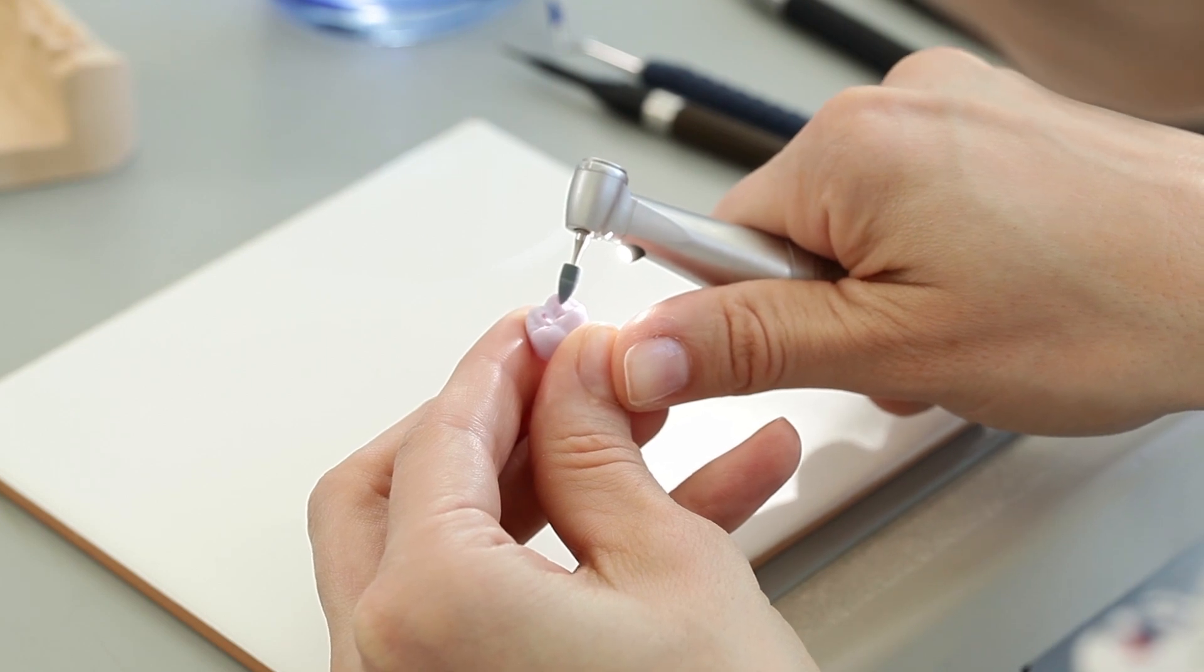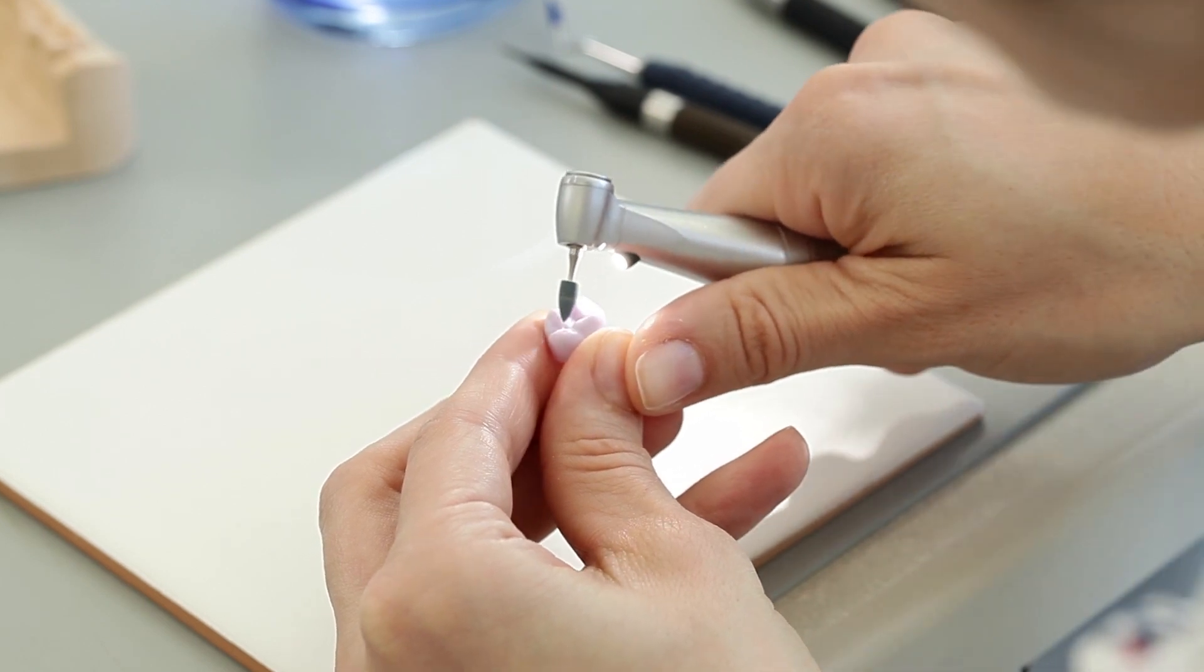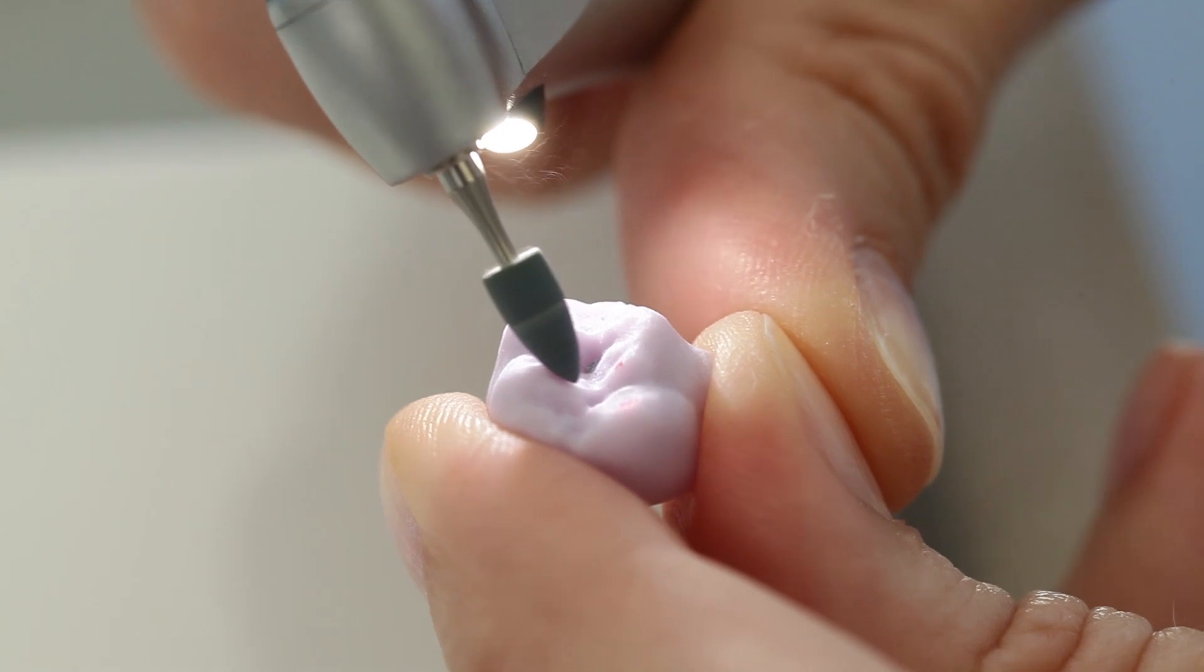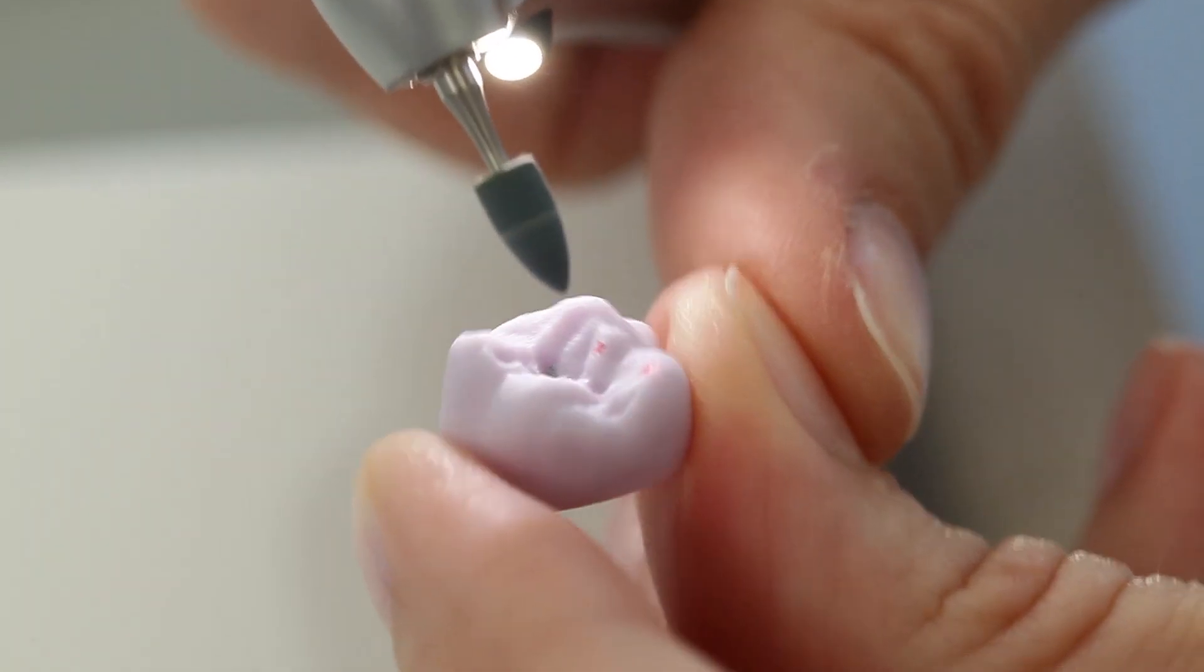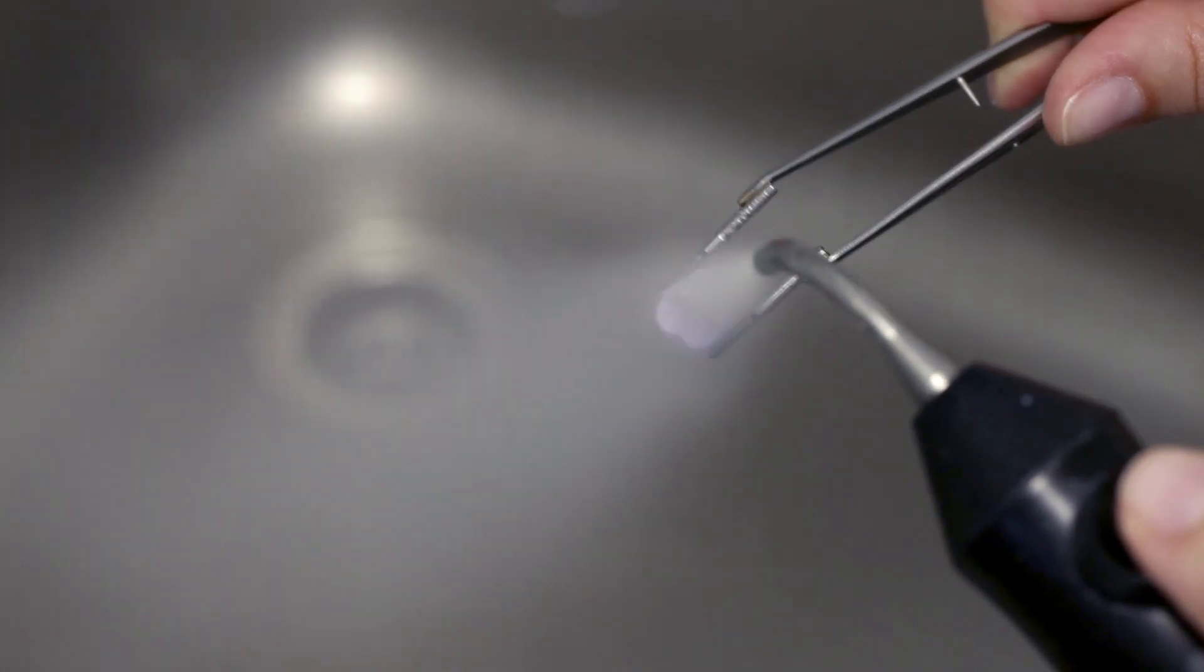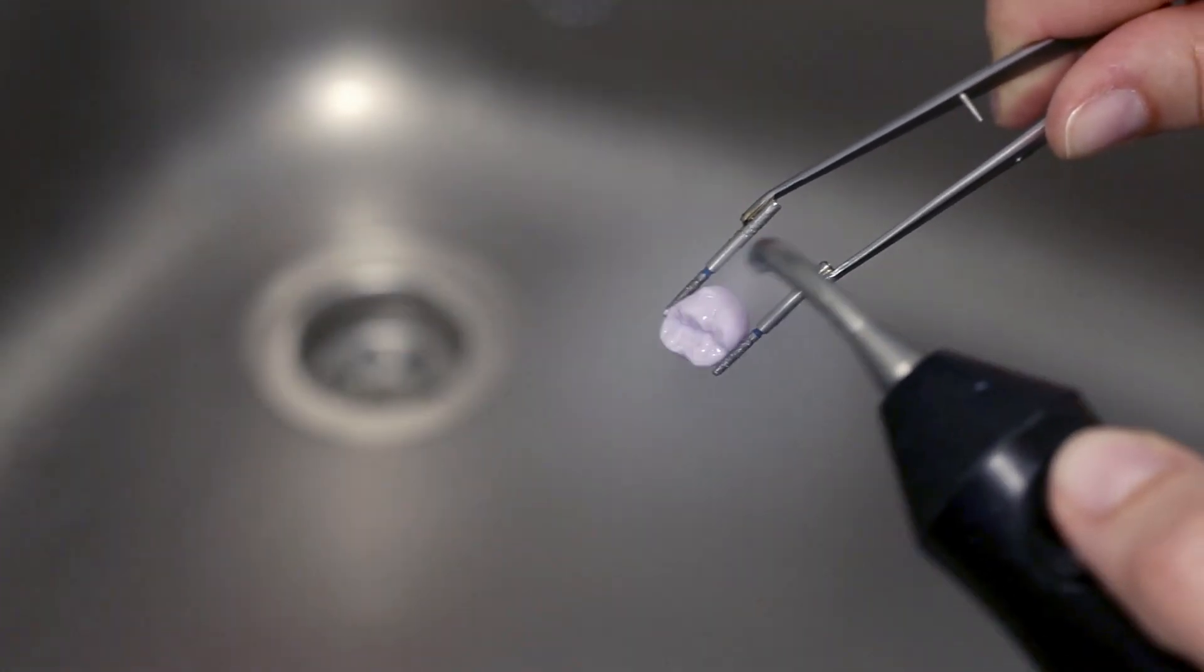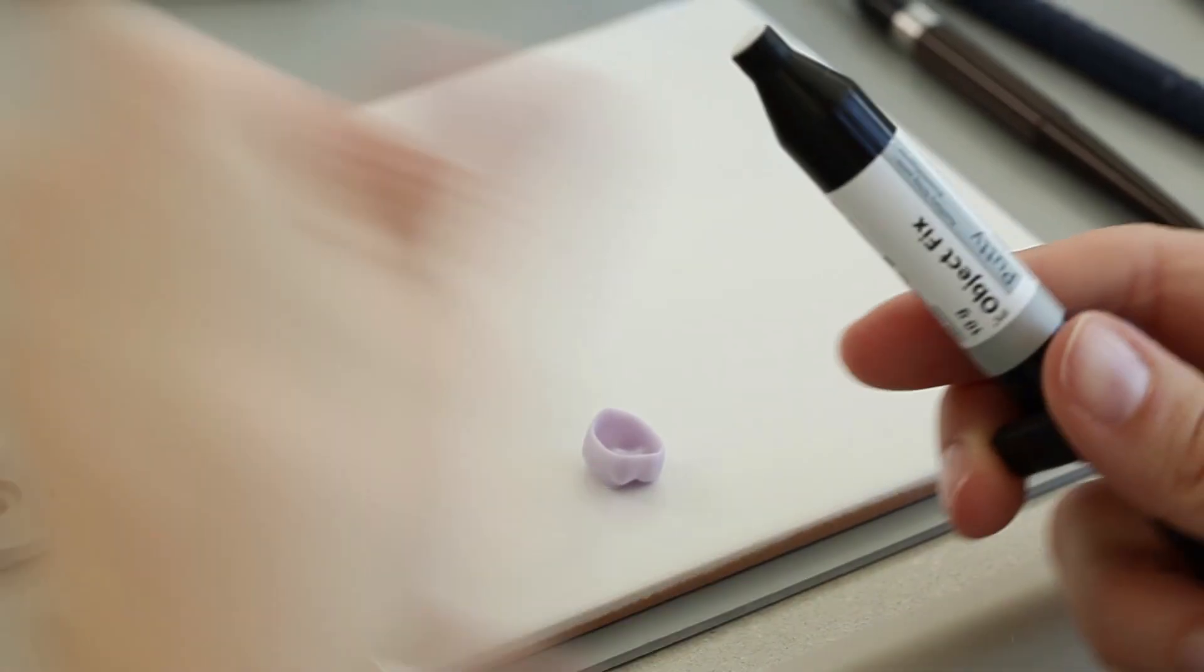Surface grind the entire occlusal surface and smooth out the structure created by the CAD CAM procedure. Make sure to maintain the minimal thickness. Clean the restoration before continuing with the next step. Either blast with a steam jet or use ultrasound in a water bath.